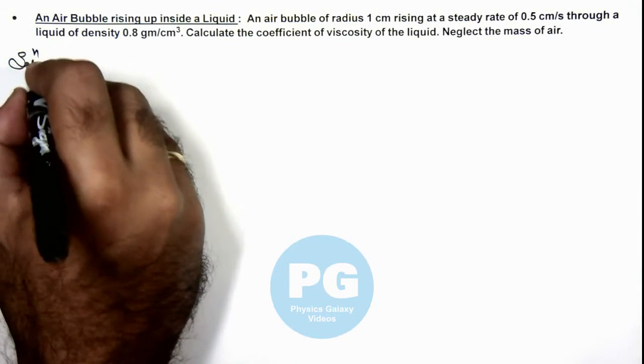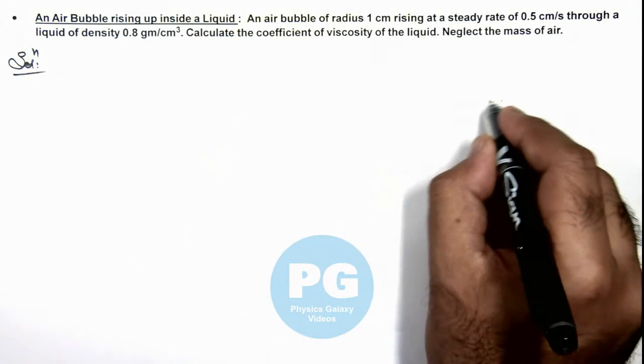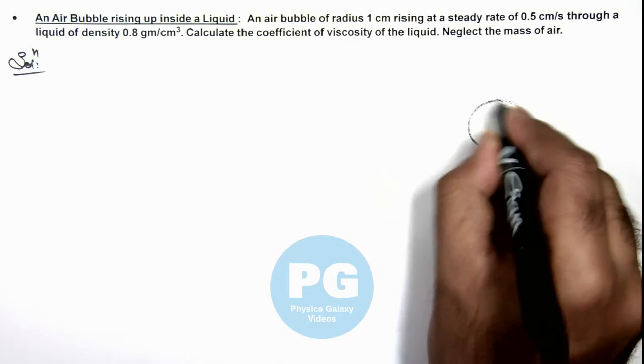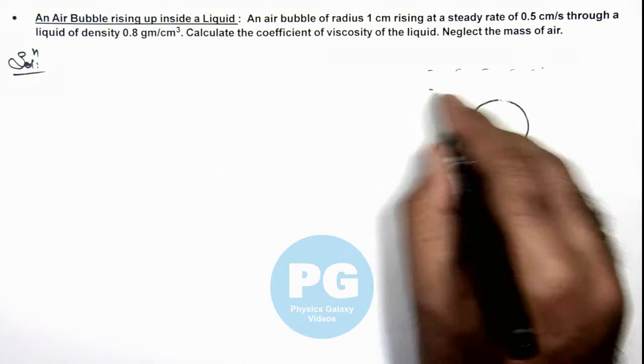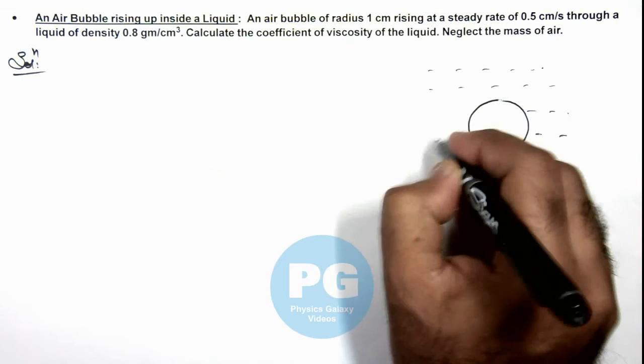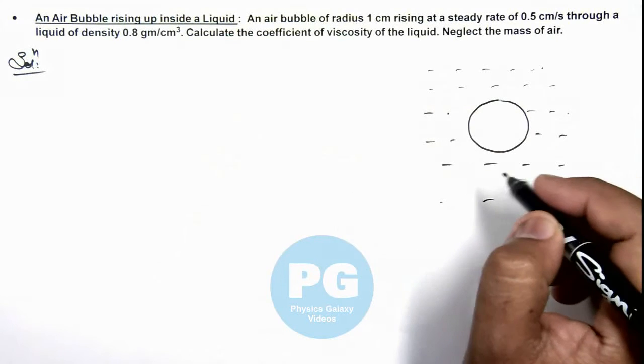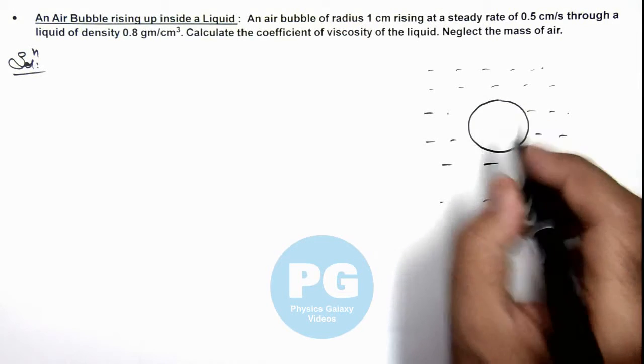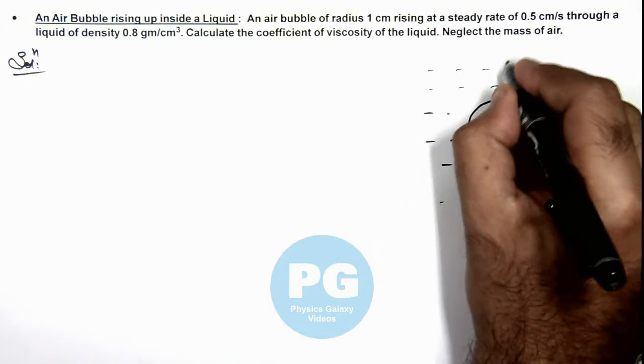So here if we draw the figure - if this is an air bubble inside a liquid, then here we are given that it is rising up at a velocity v.